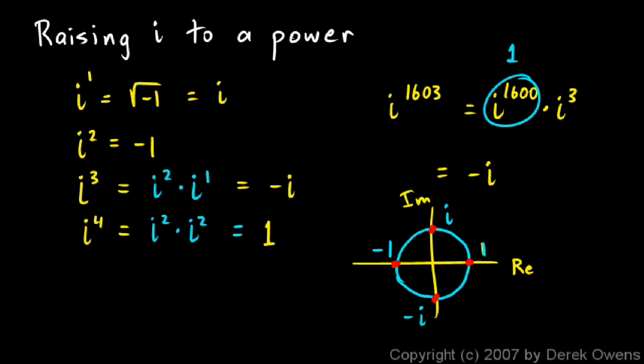So raising i to a power just involves rotating around that circle. We start with i to the 0, then i to the 1st, i to the 2nd, i to the 3rd, i to the 4th — and you can keep going around: i to the 5th, i to the 6th, i to the 7th. That concept of rotating around the circle turns out to be a very powerful idea when it comes to raising any complex number to a power, but we'll save that topic for the pre-calculus class. For now, just know there's a lot of really cool and useful stuff you can do in the complex plane.